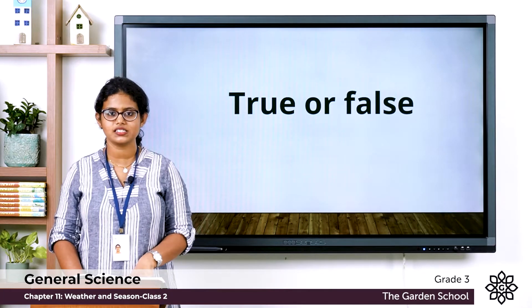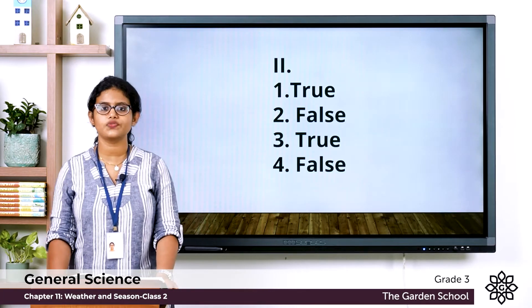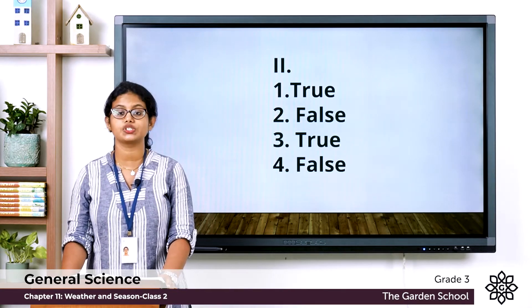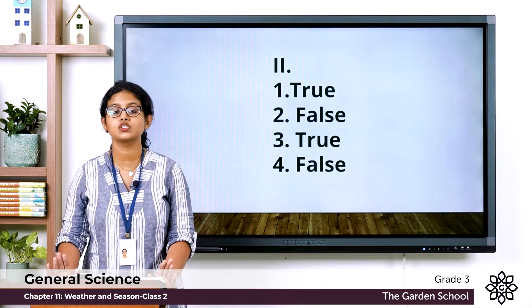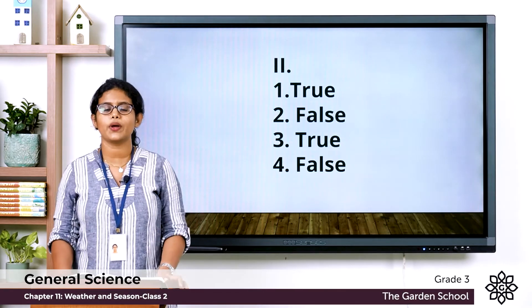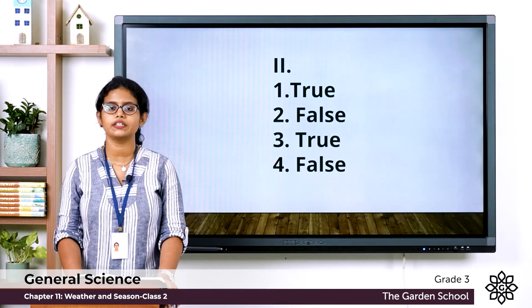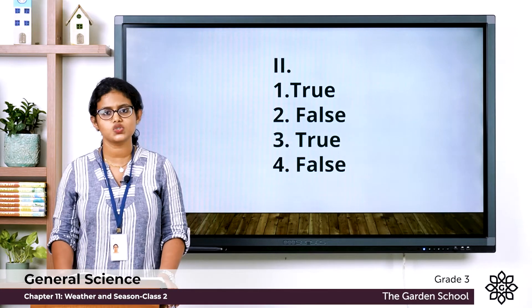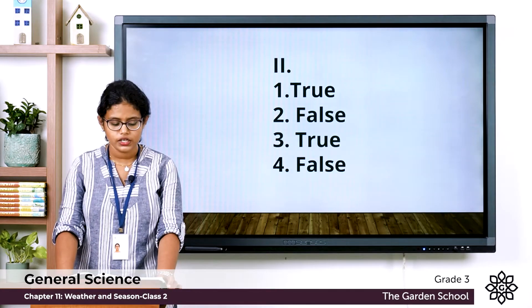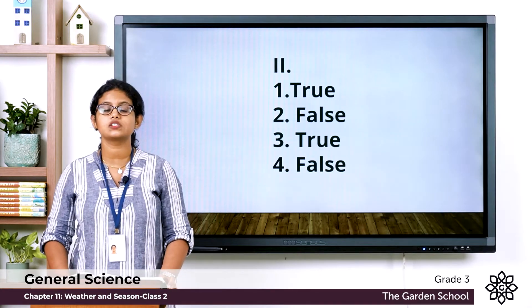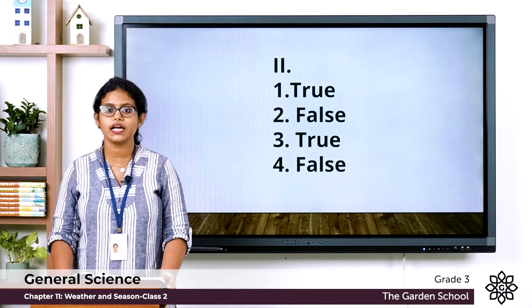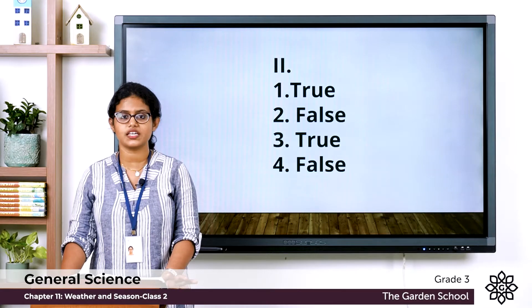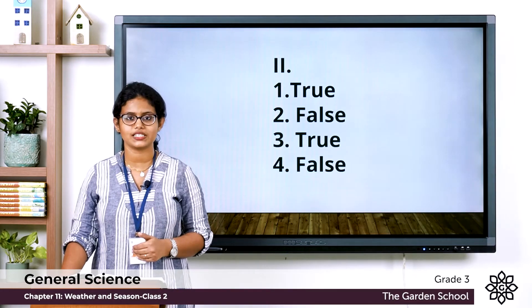Let's see the answers. First — weather conditions are caused by changes in the air. The answer is true; most weather conditions are caused by the air around us. Second — the weather of a place always remains the same. The answer is false; the weather does not remain the same, it changes frequently.